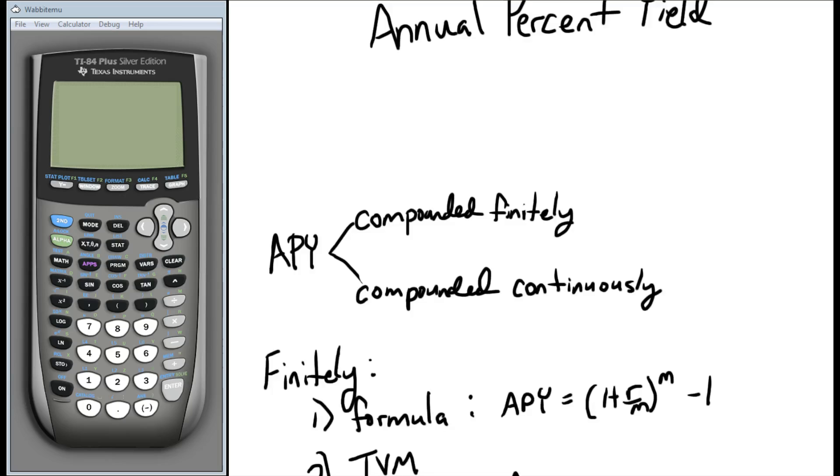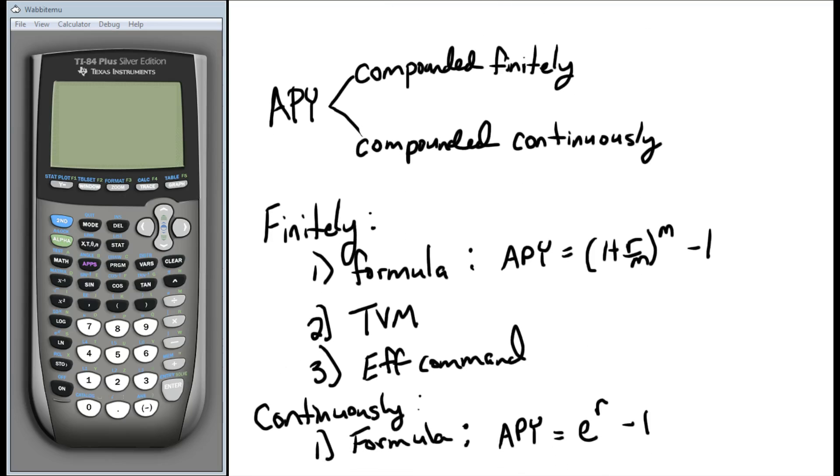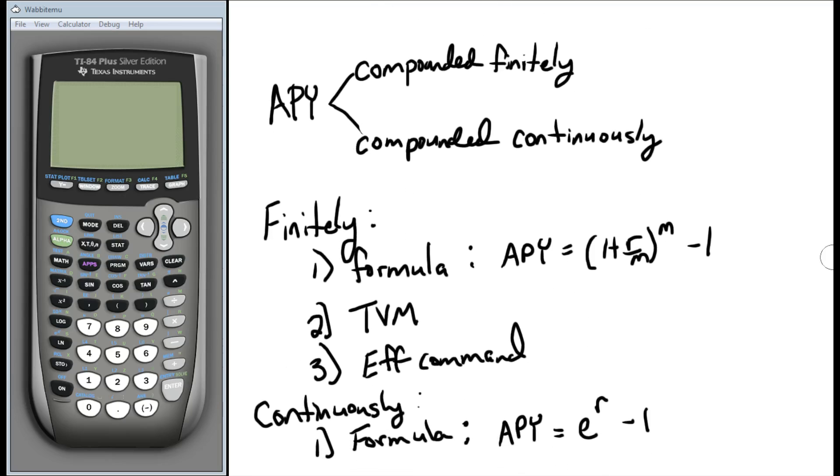So first off, we have two different types of problems. We've got where things are compounded finitely, like monthly, quarterly, daily, annually, etc. And we've got compounded continuously. Each one is handled slightly differently, just as they are with the regular compound interest problems.